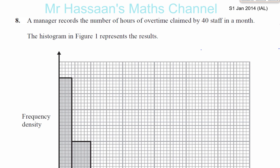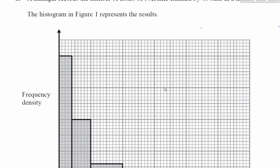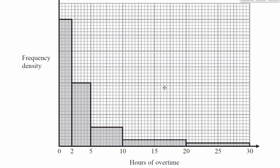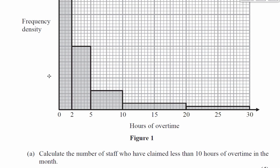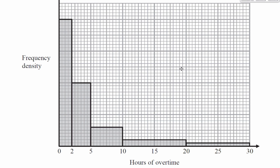January 2014, question 8, S1 Statistics 1 IAL paper. A manager records the number of hours of overtime claimed by 40 staff in a month. The histogram in Figure 1 represents the results. In this histogram, 40 employees are represented — the total frequency in the whole histogram is 40. The question asks us to calculate the number of staff who have claimed less than 10 hours of overtime in the month.